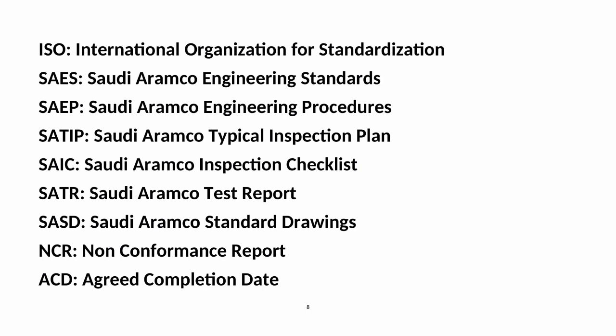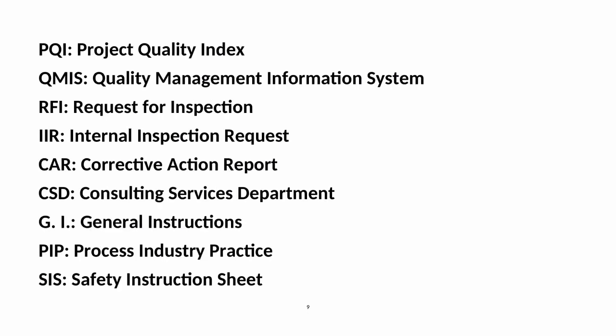Further abbreviations: ACD — Agreed Completion Date; PQI — Project Quality Index; QMIS — Quality Management Information System; RFI — Request for Inspection; IIR — Internal Inspection Request; CA — Corrective Action Report; CSD — Consulting Services Department; GI — General Instructions; PIP — Process Industry Practice.